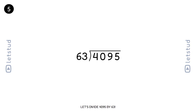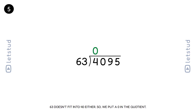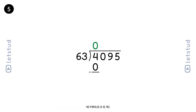Let's divide 4095 by 63. We start with the digit 4. 63 doesn't fit into 4, so we look at the first two digits, 40. 63 doesn't fit into 40 either, so we put a 0 in the quotient. 40 minus 0 is 40.